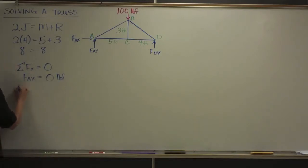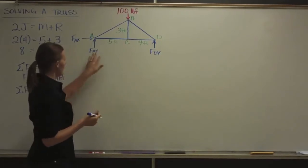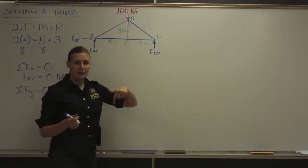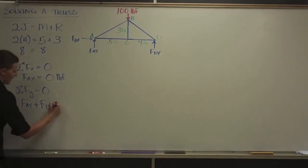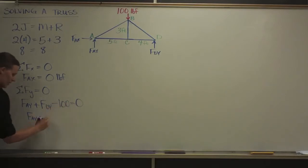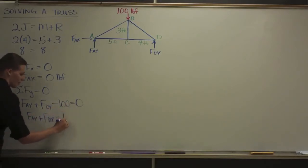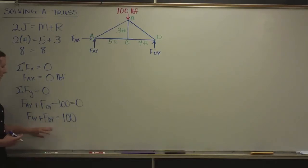Let's do the Y-direction. The sum of the forces in Y must total to zero. I see F-A-Y and F-D-Y both pointing upwards, so they're positive. The 100-pound force is pointing down, so that's negative 100. So: F-A-Y plus F-D-Y minus 100 equals zero, which simplifies to F-A-Y plus F-D-Y equals 100. But with two unknowns, I must move on to the moments and come back to this equation later.